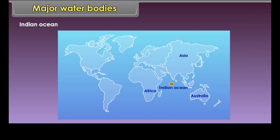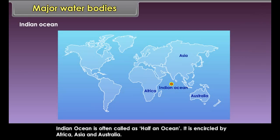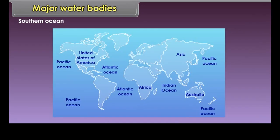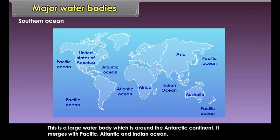The Indian Ocean is often called half an ocean. It is encircled by Africa, Asia, and Australia. It is a small ocean and does not open northwards. The deepest trench of the Indian Ocean is the Sunda Trench. The Southern Ocean is a large water body around the Antarctic continent, and it merges with the Pacific, Atlantic, and Indian Oceans.